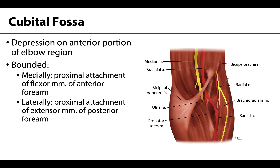Those extensor muscles attach right above the lateral epicondyle and form the lateral boundary. It's really the muscles of the forearm and their proximal attachments forming these boundaries. The expansions under the skin are formed by muscles and their tendons, creating the bumps that cause the depression of the cubital fossa.